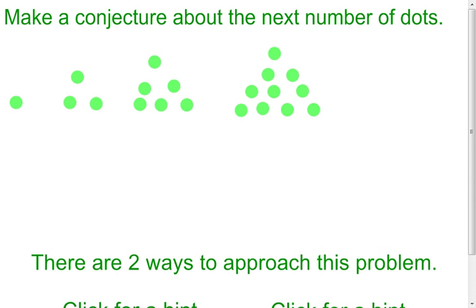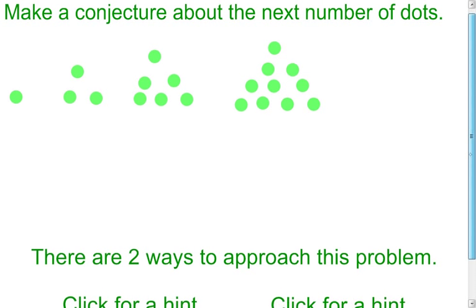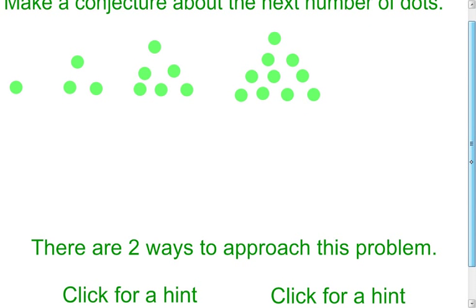My suggestion for many of the slides in this lesson would be to push pause and see if you can come up with conjectures based on the problem. In this one, there are two different ways to make your conjectures on how many dots will be in the next picture. Go ahead, push pause, and see if you can figure out how many dots come next.